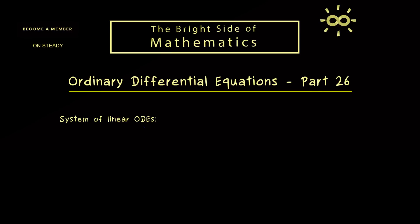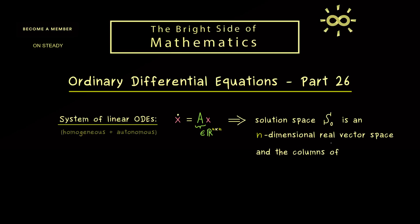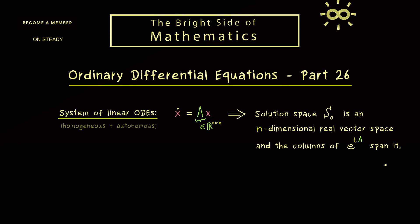Let's start with what we already know about systems of linear ODEs which are autonomous and homogeneous. We have the explicit formulation x-dot equals Ax, where A is an n-times-n real matrix, so the whole ODE lives in the real numbers. As shown in part 19, the solution space S0 of this system is an n-dimensional vector space. No matter how matrix A is given, the dimension of S0 always equals the size of the system. Moreover, the columns of the matrix exponential span this solution space — every column as a function of t gives a solution, and all these solutions are linearly independent.